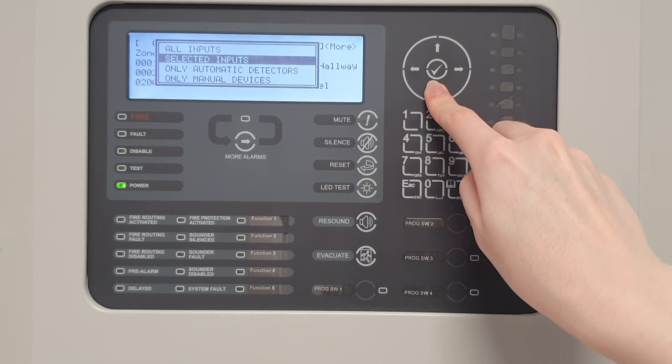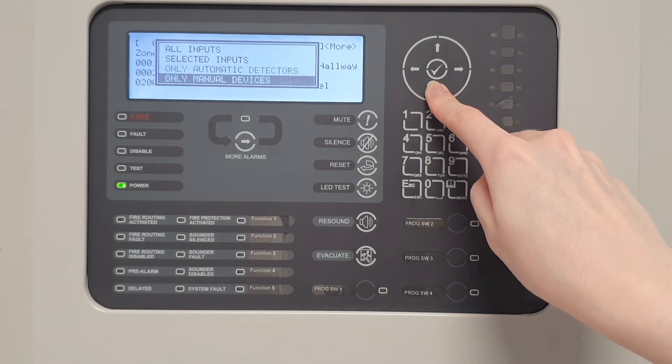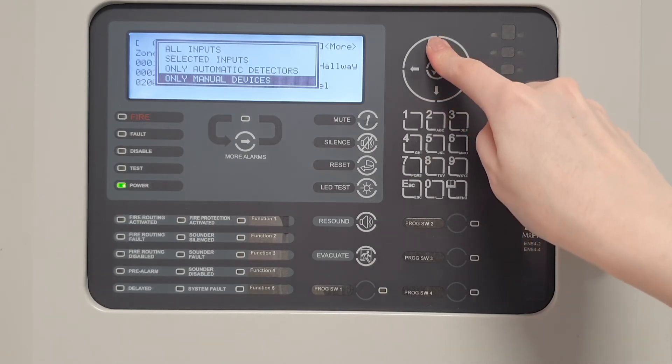Selected inputs will allow the option to only disable specific devices. Only automatic detectors will disable automatic detection such as smoke, heat and multi detectors. Only manual devices will disable manual devices such as manual call points. And all other devices will disable other devices not mentioned.